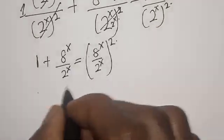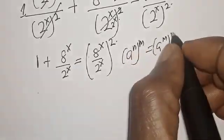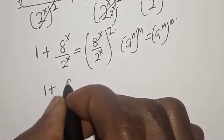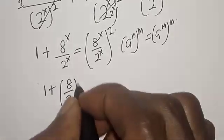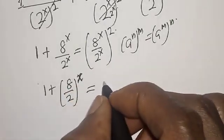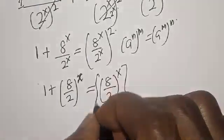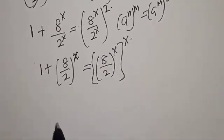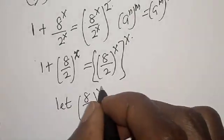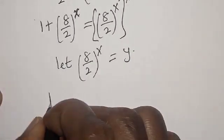Remember that a raised to power x over b raised to power x equals (a/b) raised to power x. So we have 1 plus (8 over 2) raised to power s is equal to (8 over 2) raised to power s, all squared. Let (8 over 2) raised to power s equal y.